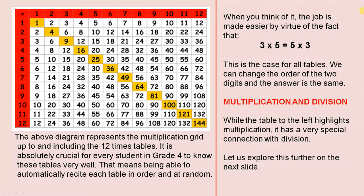When you think of it, the job is made easier by virtue of the fact that 3 times 5 equals 5 times 3. So, if we look here, 3 times 5, there's the answer there, 15, see that? Let's look at 5 times 3, 5 times 3, that's also 15. So basically, it just makes our job a lot easier. This is the case for all tables. We can change the order of the two digits, and the answer is the same.